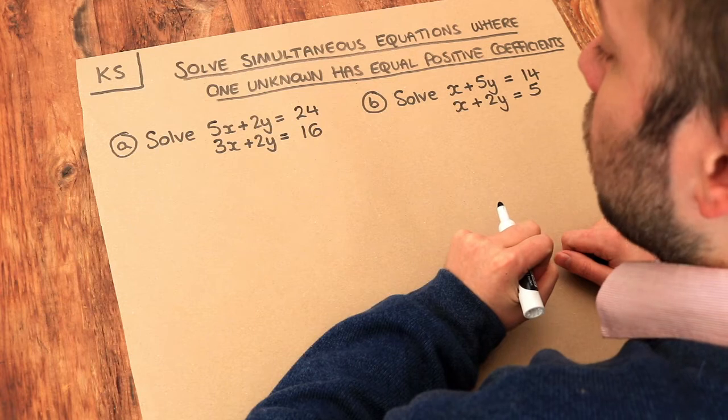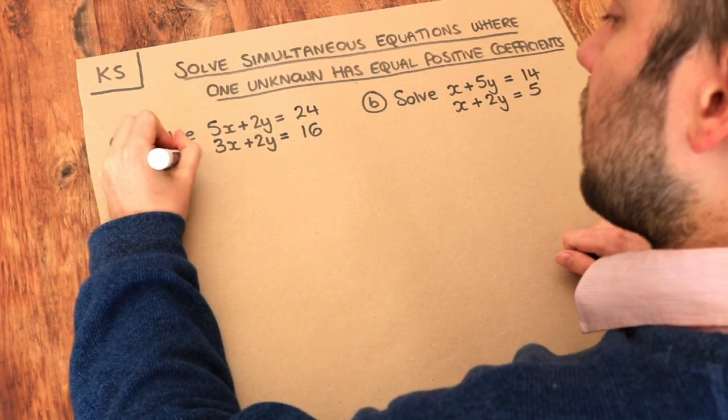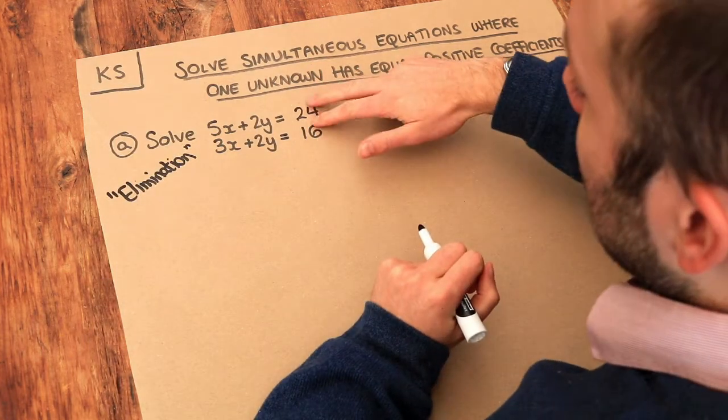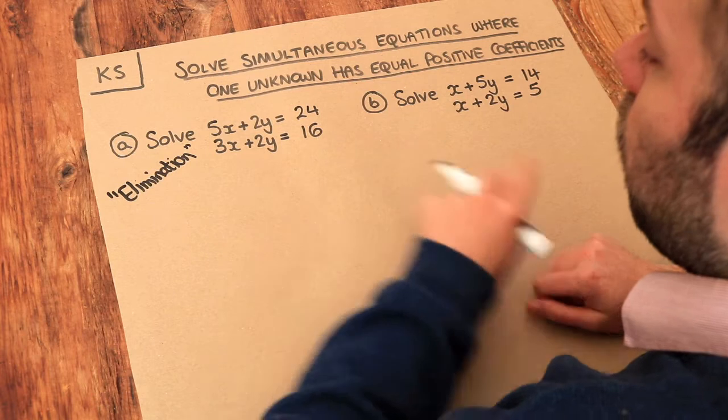Now we're going to look at a method called elimination. The way elimination works is to either add or subtract the equations to make either x or y disappear.